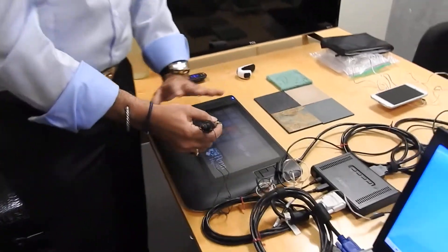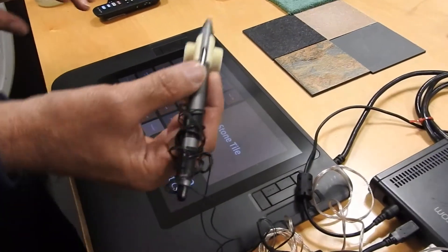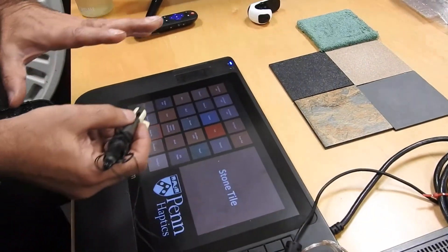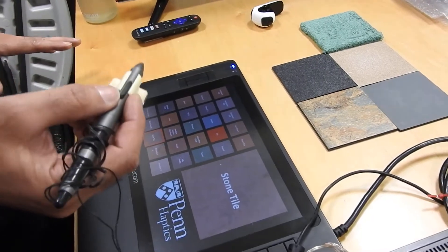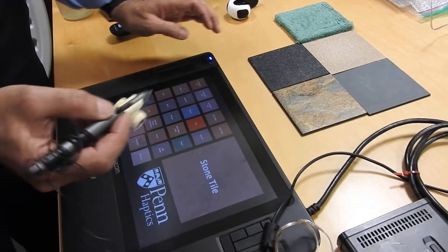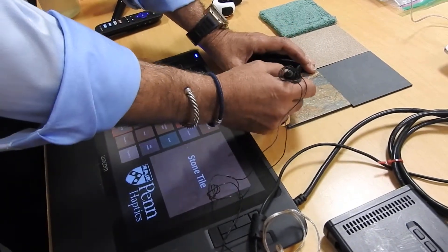What I'm going to show you is a tablet with a standard stylus where we have digitized a number of material surfaces that we can actually begin to replicate and experience as they were real. Here I will use the example of a stone material.